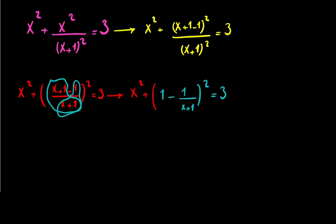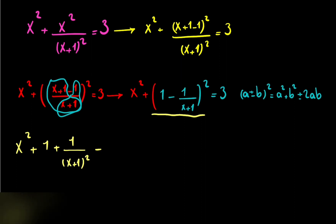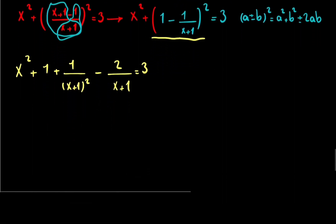If you look at this equation, you can write it using the identity: a minus b squared equals a squared plus b squared minus 2ab. So in this case you can write it as x squared plus 1 — because 1 squared equals 1 — plus 1 divided by x plus 1 squared, minus 2 divided by x plus 1, equal to 3.